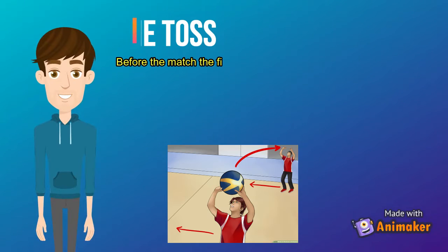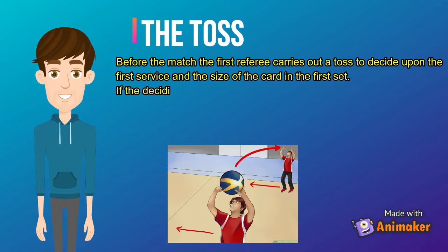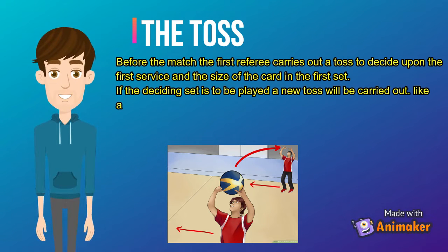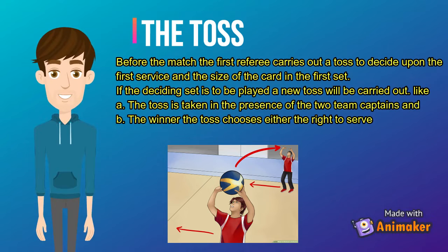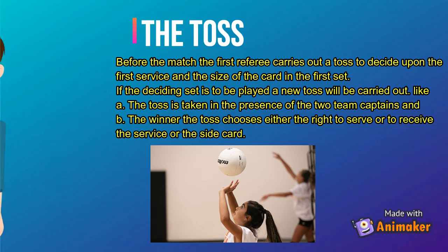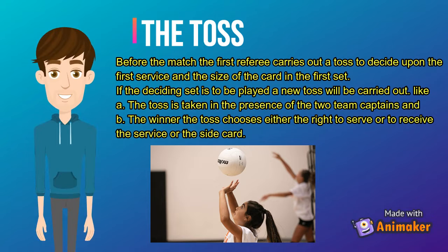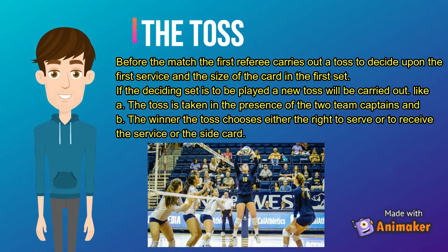The toss. Before the match, the first referee carries out the toss to decide upon the first service and the side of court in the first set. When the deciding set is to be played, a new toss will be carried out. The toss is taken in the presence of the two team captains, and the winner of the toss's choice is either the right to serve, to receive the service, or a side.